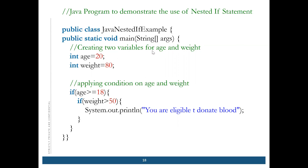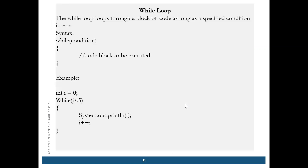Example of nested if: two variables — weight and age. Age is 20, weight is 80. If age is greater than 18 AND weight is greater than 50, then you are eligible for blood donation. In the present condition, age is greater than 20 and weight is also greater, so it will go inside this loop and print that the person is eligible.